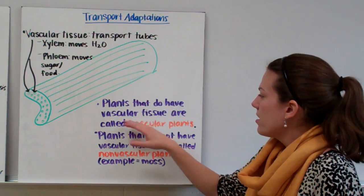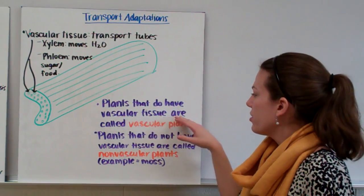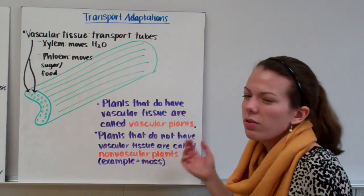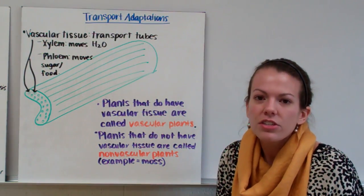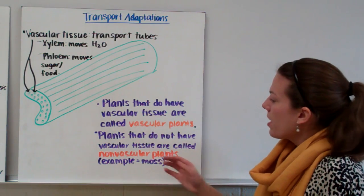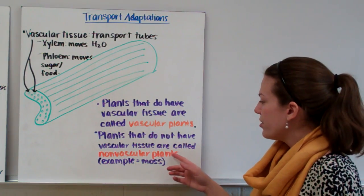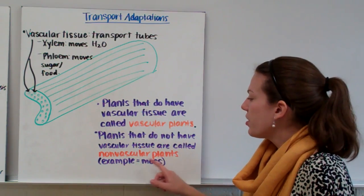Plants that do have vascular tissue are called vascular plants. So the name makes sense. If they have vascular tissue, they're called vascular plants. And plants that do not have vascular tissue are called nonvascular plants.